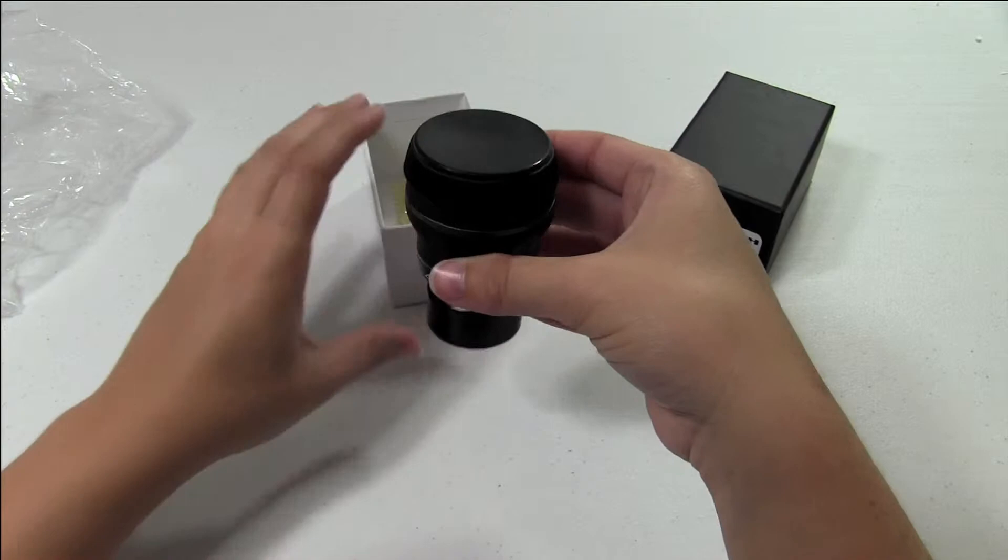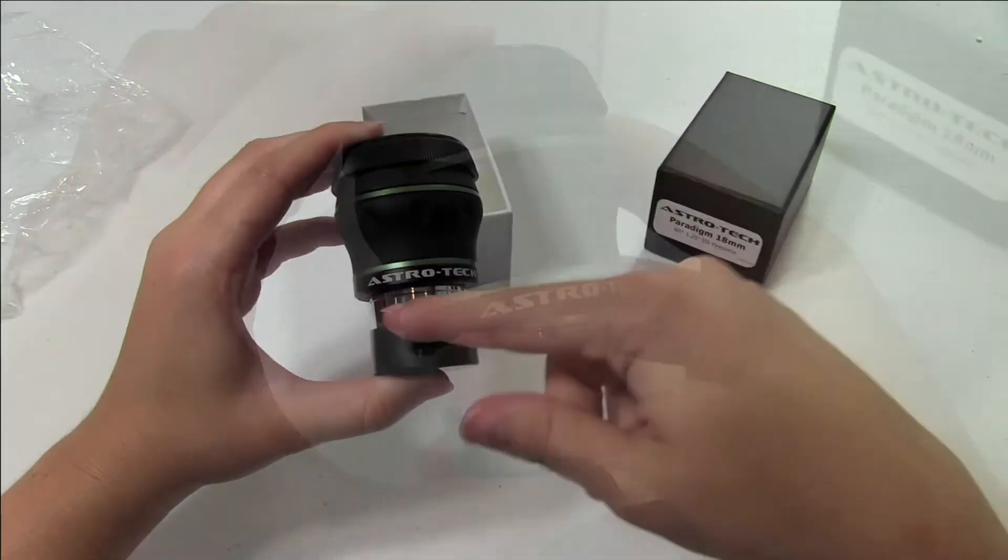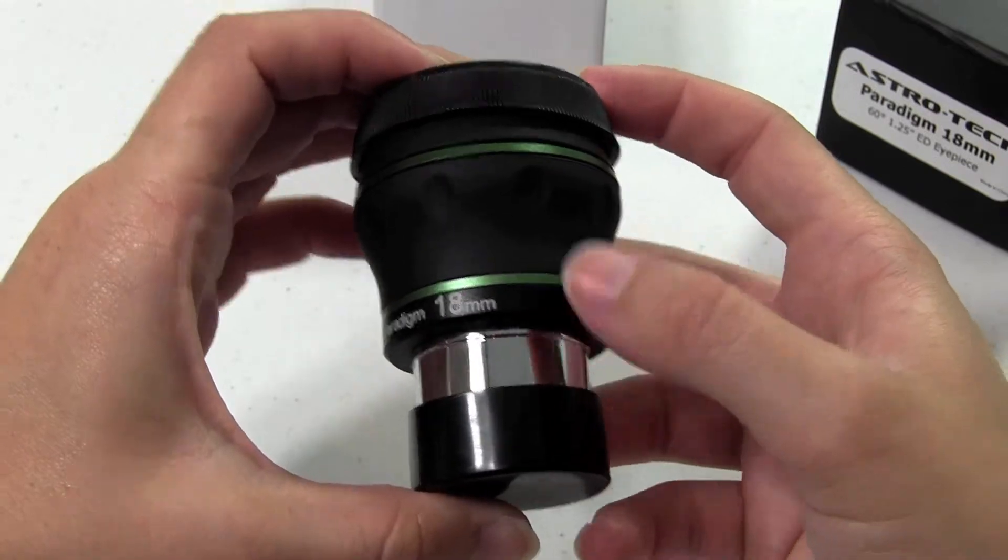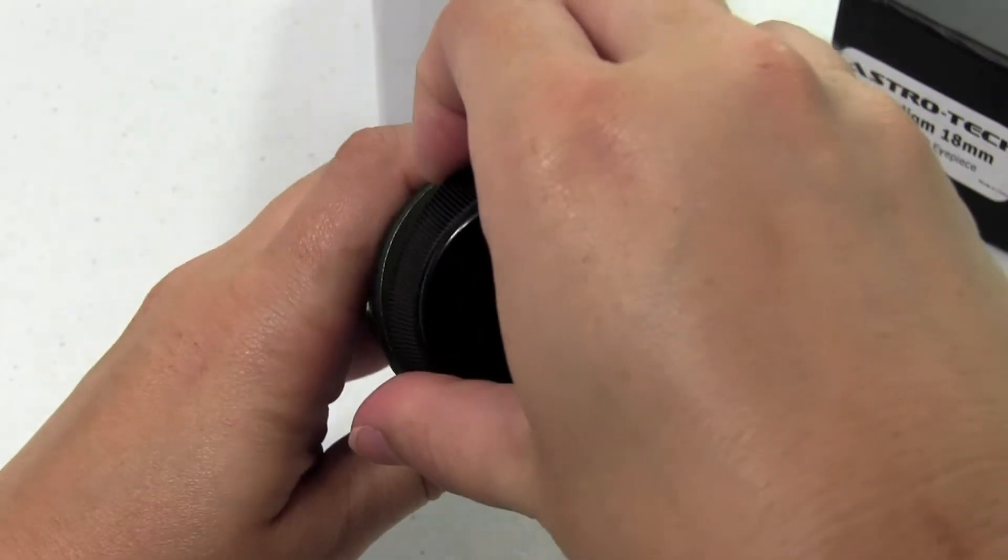The eyepiece has a rubberized body so it can take any sort of minor bumps and bruises it might get from being in your eyepiece case. It has an inch and a quarter barrel that is threaded for filters.